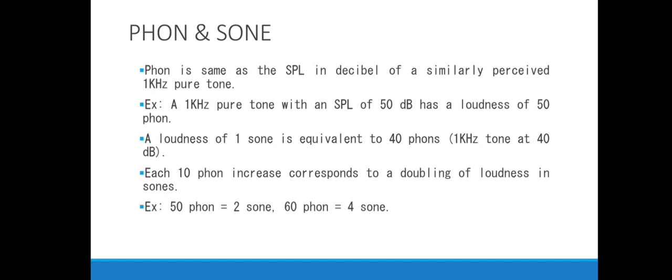Phon is the logarithmic unit, so it is the same as sound pressure level in decibels — a 1 kHz pure tone with an SPL of 50 dB has a loudness of 50 phons; at 60 dB it would be 60 phons. Sone is a linear unit: one sone is equivalent to 40 phons, and for every 10-phon increase, loudness doubles in sones. So 50 phons equals 2 sones, 60 phons equals 4 sones, 70 phons equals 8 sones, and so on.